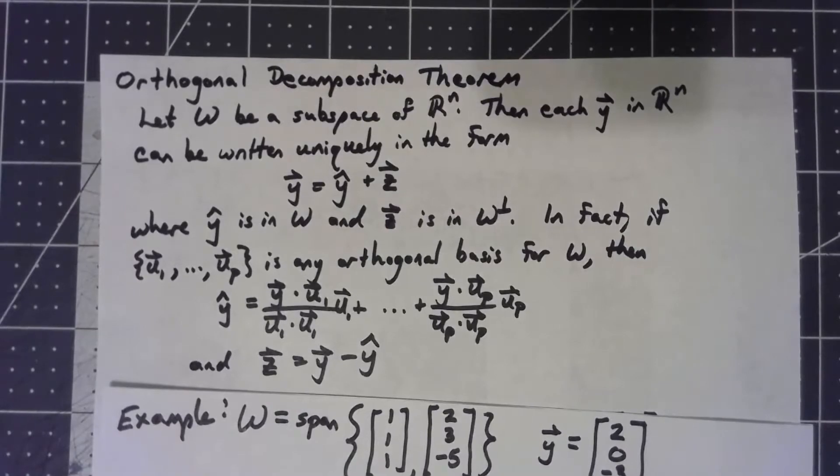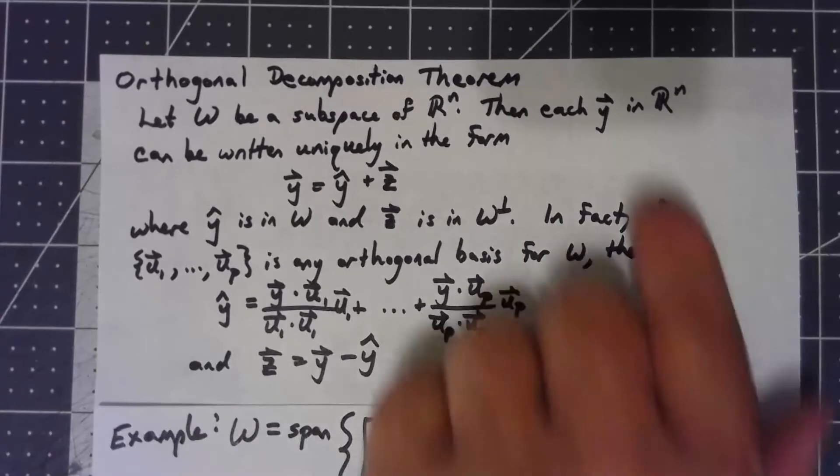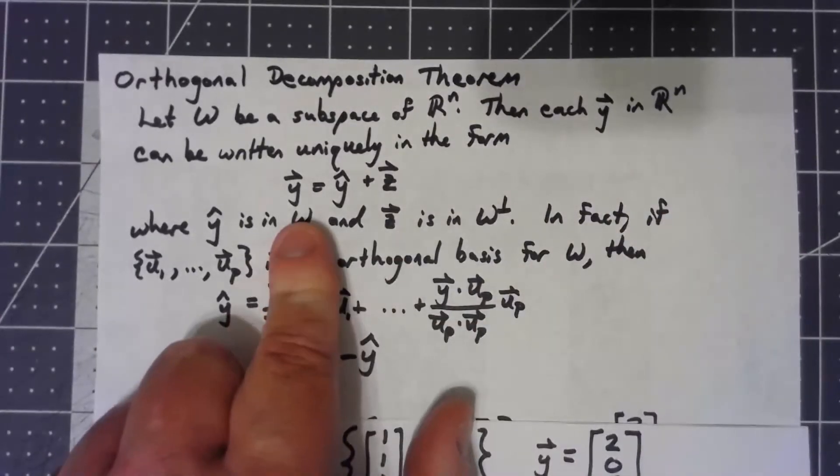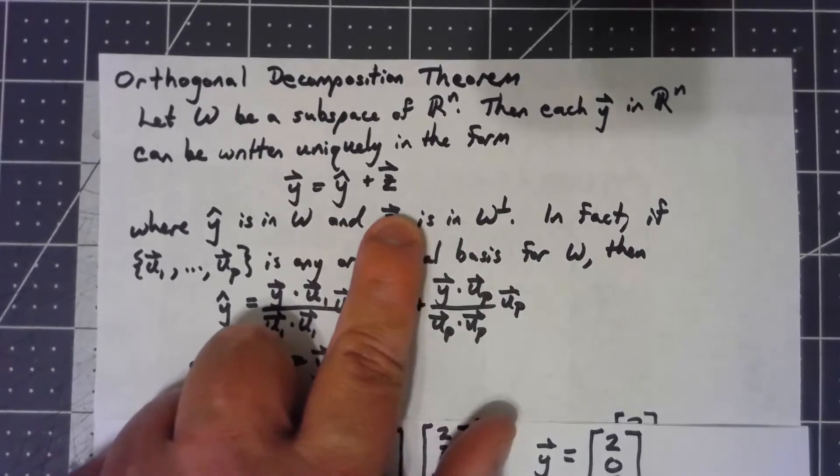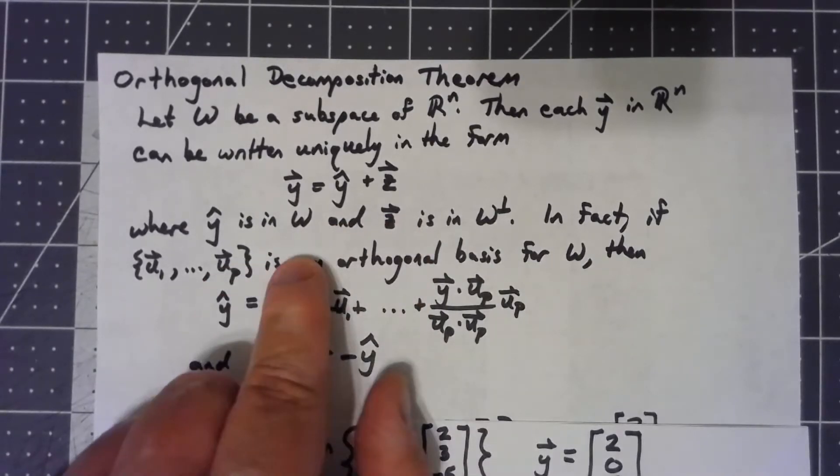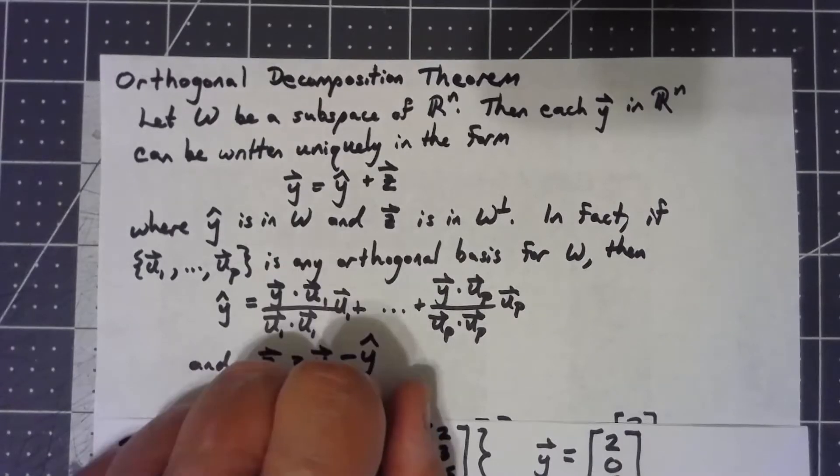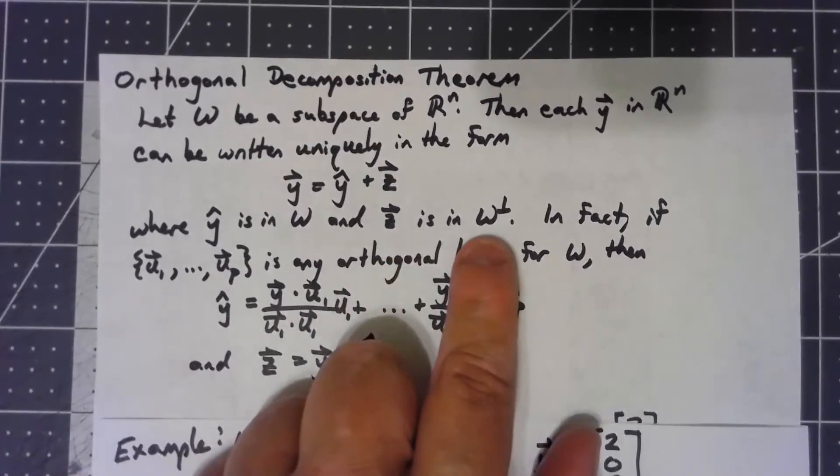So we can generalize that by projecting onto any subspace of our Rⁿ. For each vector y, we can write it as that vector is y-hat plus z vector, where we're going to say that the y-hat is the part of y that's in the subspace, and z vector is perpendicular to that subspace.